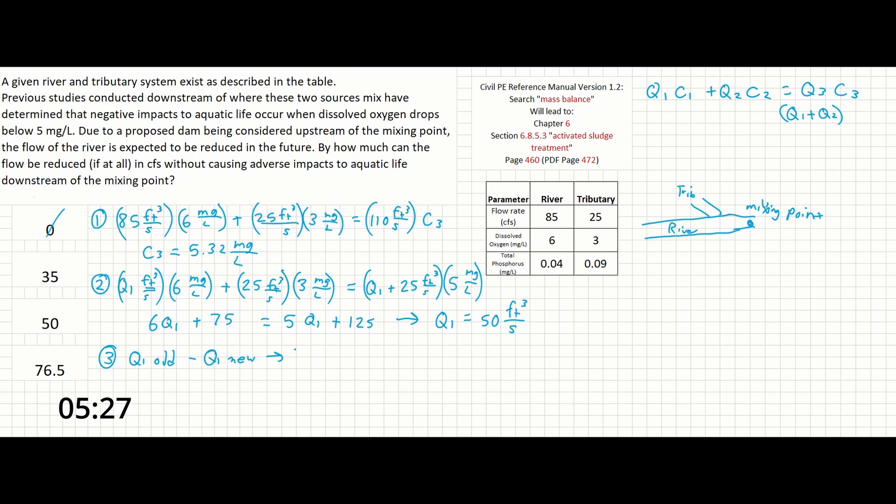Or in this case, 85 minus 50 cubic feet per second will give us an answer of 35 cubic feet per second. We can see that answer is number 2 over here, and the problem is solved.